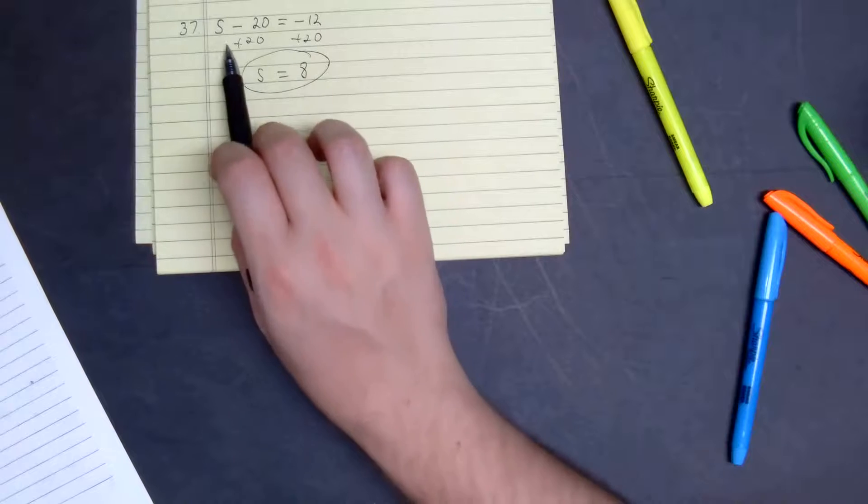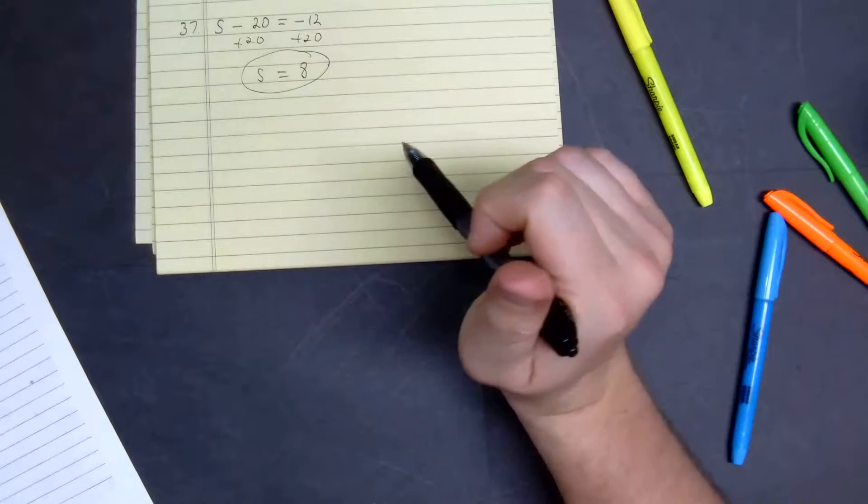If you want to check your work, you plug it into S. 8 minus 20 gives us negative 12. Here we go.